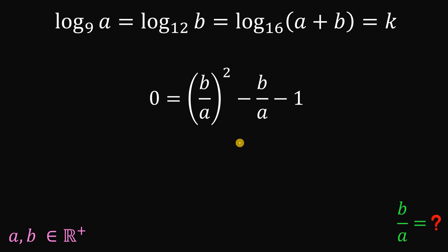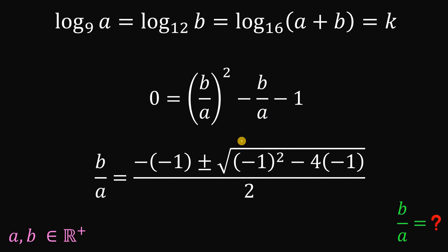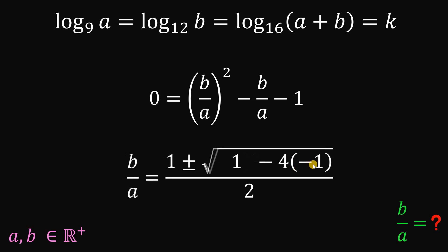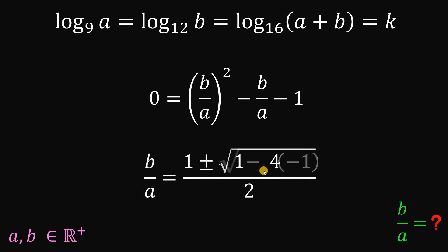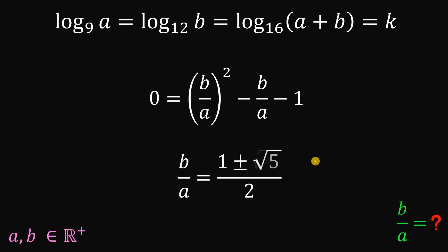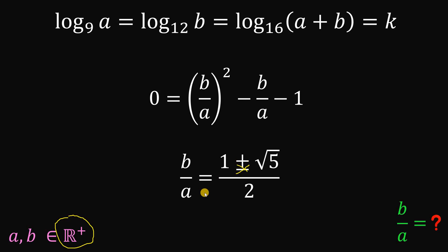We can find the value of B over A using the quadratic formula. Simplifying: negative of negative 1 is positive 1, negative 1 squared is positive 1, negative 4 times negative 1 is positive 4, and 1 plus 4 is 5. We have two possible values of B over A. But since A and B are both positive real numbers, the ratio B over A cannot be negative. So we disregard the negative value. Thus, B over A is simply equal to 1 plus square root of 5, over 2.